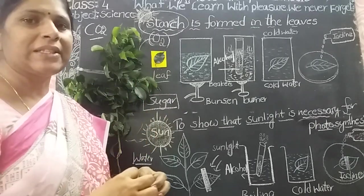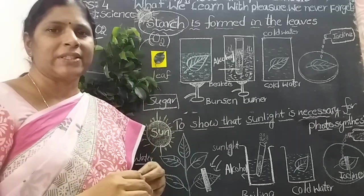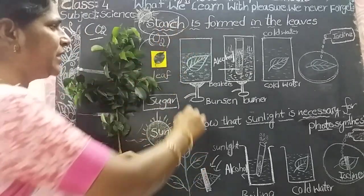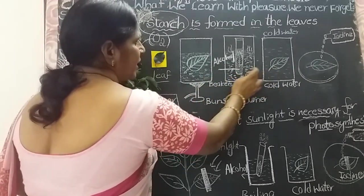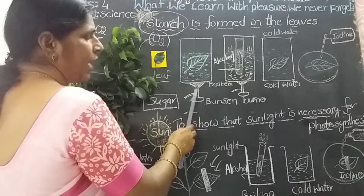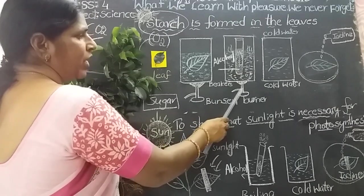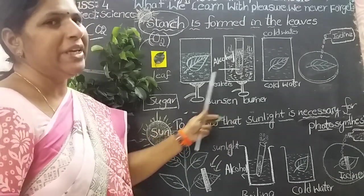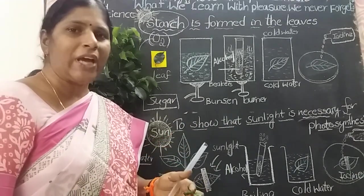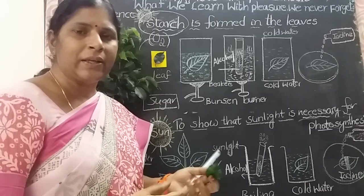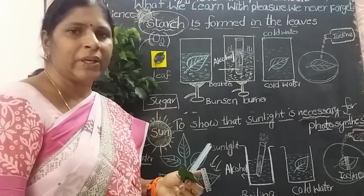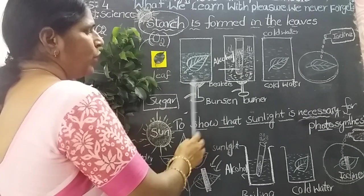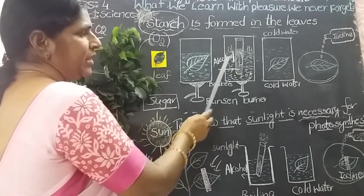Keep the healthy plant under the sun for 24 hours or a few hours. After that, pluck one leaf from the plant and keep in boiling water. Here are the beakers — I pour water in these three beakers and supply heat using Bunsen burners. Take the leaf and keep in the boiling water when the water is boiling. After one or two minutes, take out the leaf and keep in a test tube.